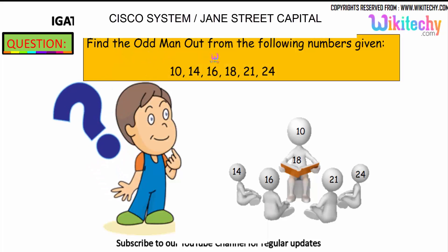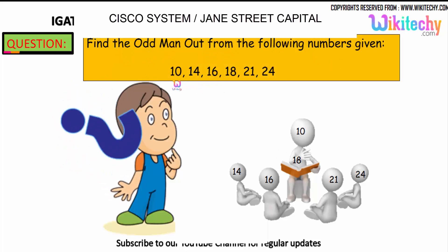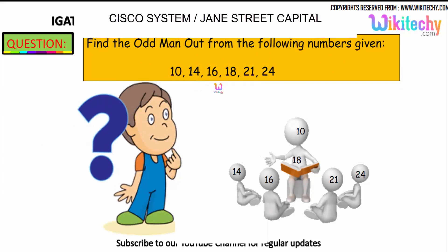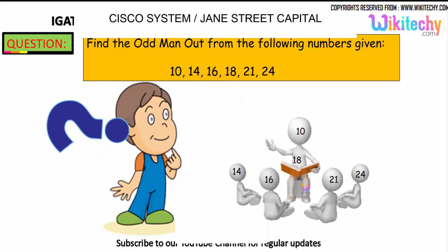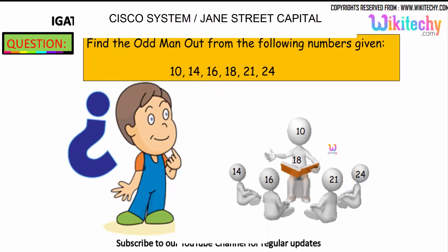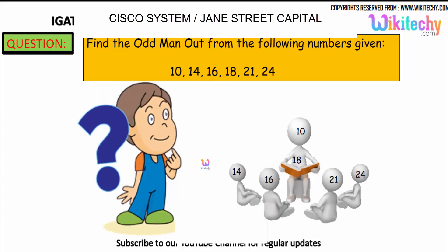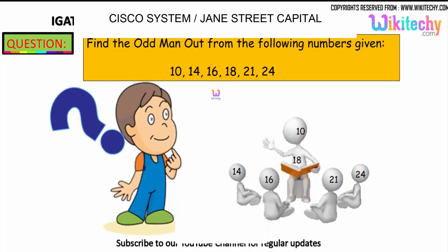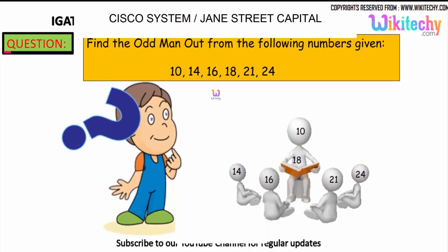Find the odd man out from the following numbers: 10, 14, 16, 18, 21, 24. Which one is the odd one? Let's see.